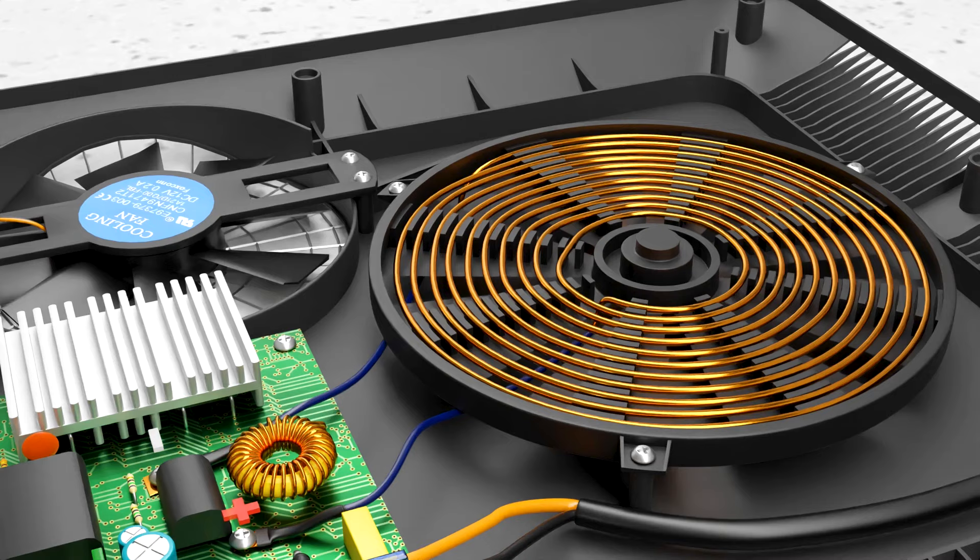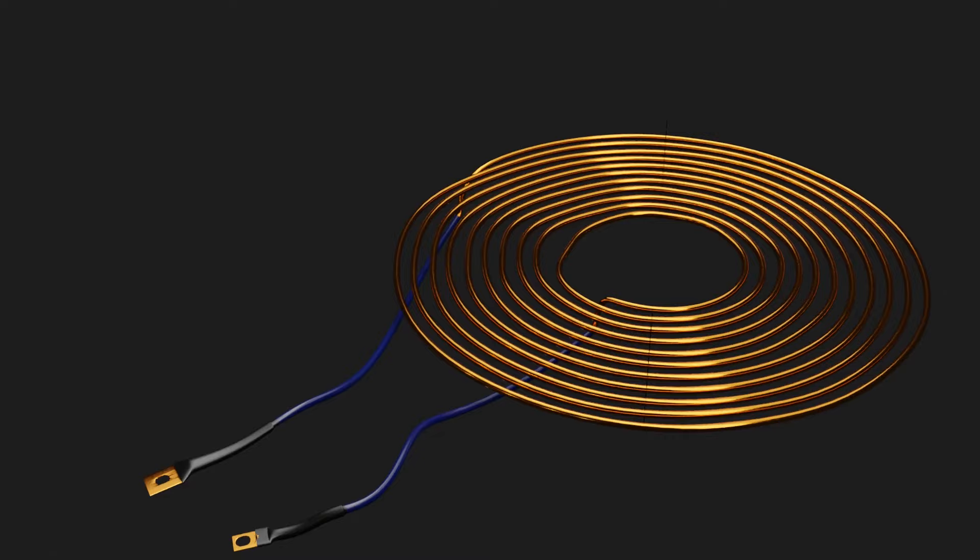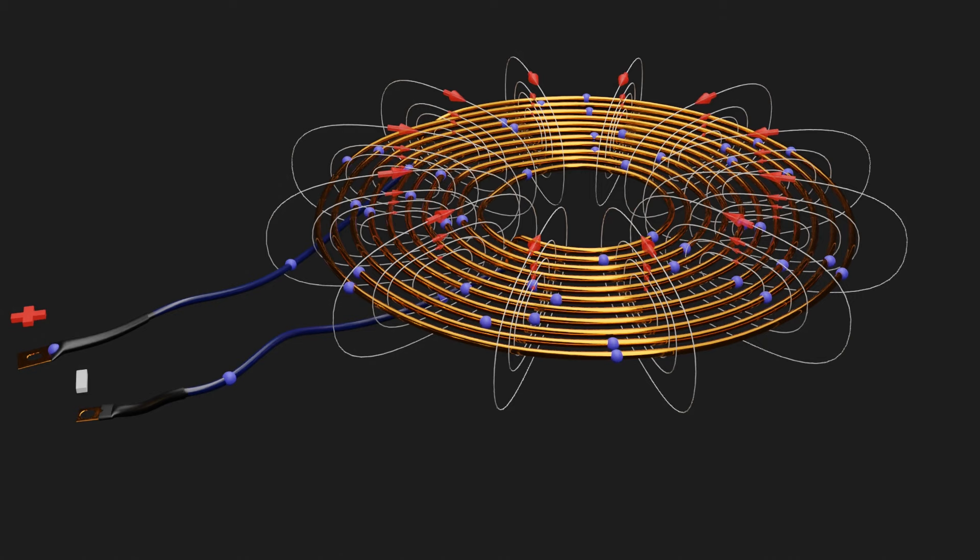Let's apply this concept for understanding induction heating. An induction coil is the most important part of an induction heater. When we connect this coil with an alternating voltage, a pulsating magnetic field is formed.